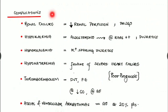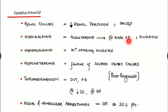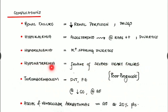Complications of heart failure include renal failure due to reduced renal perfusion and the drugs used for treatment. Hypokalemia can occur due to increased aldosterone secretion from RAAS stimulation — aldosterone causes increased potassium excretion and sodium reabsorption — and also due to diuretic therapy. Hyperkalemia can occur with prolonged potassium-sparing diuretic therapy. Hyponatremia is a feature of severe heart failure and indicates a poor prognosis.